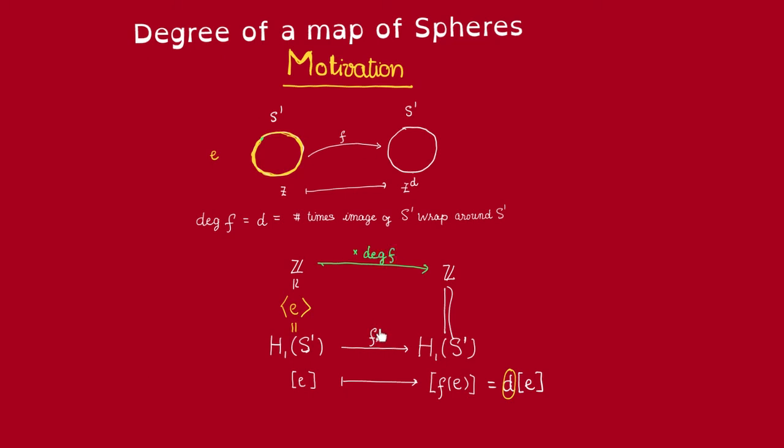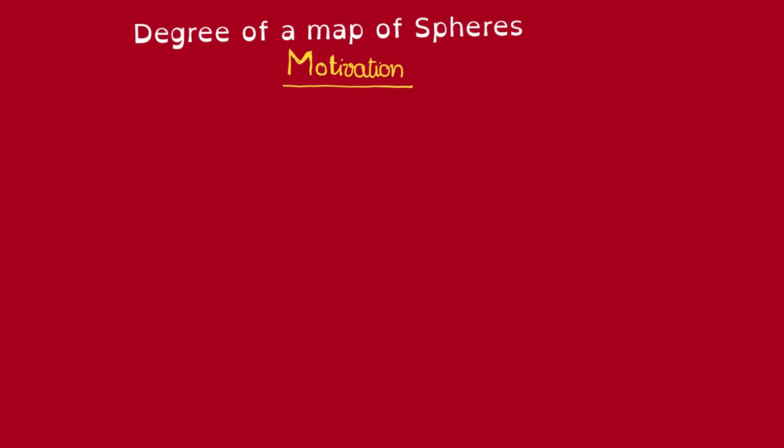In other words, this induced map on the first homology is gonna be given by multiplication by degree of f.